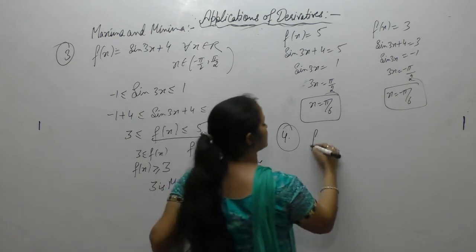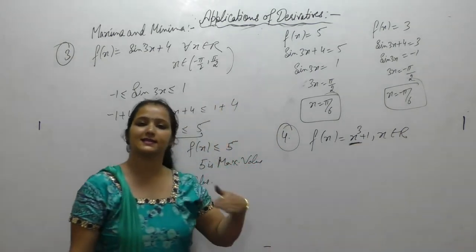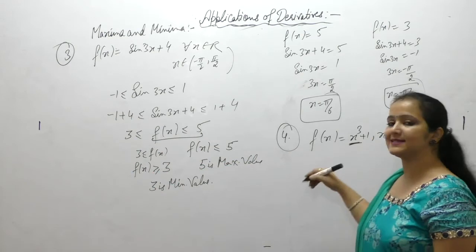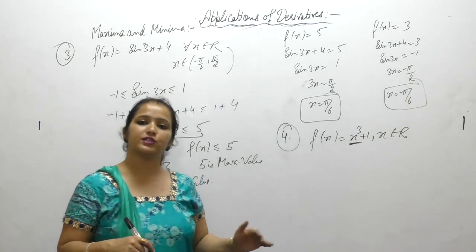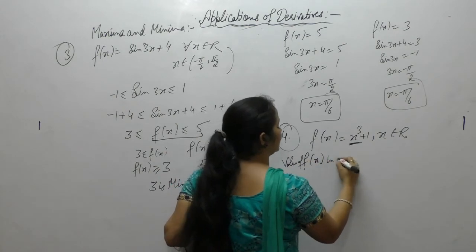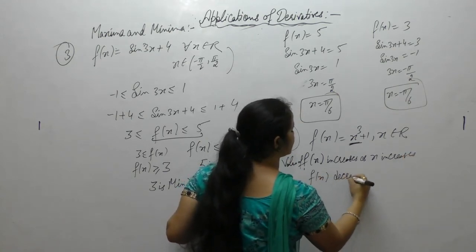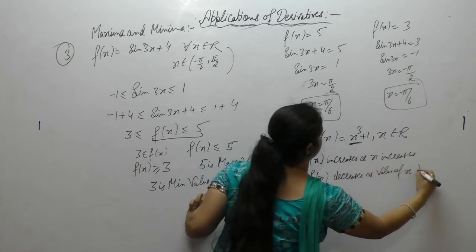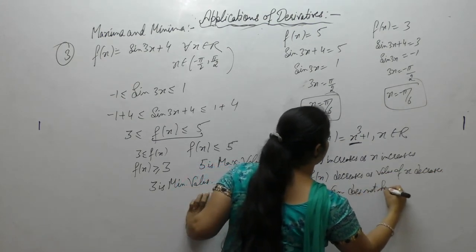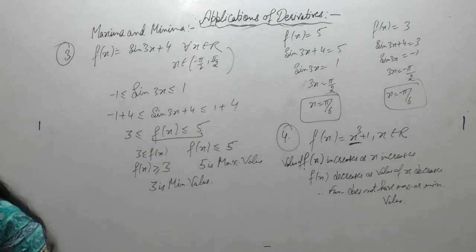Next is f(x) equal to x cubed plus 1, for x belonging to real numbers. As x increases, the value of f(x) increases, and as x decreases, f(x) decreases without bound. Therefore, the function does not have a maximum or minimum value.